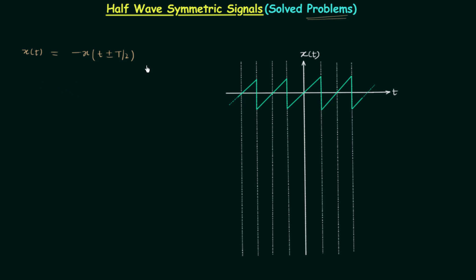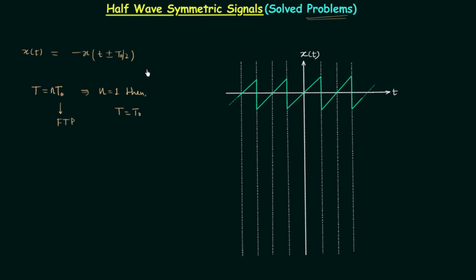There is one important point regarding this result. T is the time period and we know T equals n times T₀, where T₀ is the fundamental time period. To make calculations easy, we take T₀ in place of T. If n equals 1, then T is the same as T₀, so we can write T₀ in place of T, and in this way there will be minimum shift in the waveform.